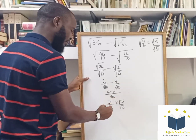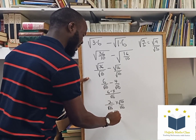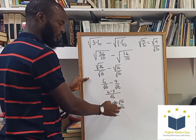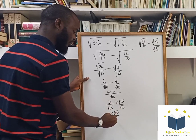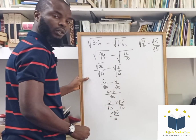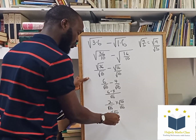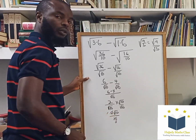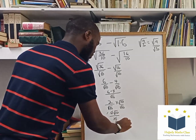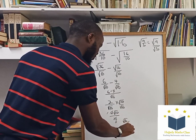2 multiplied by root 10 gives 2 root 10. Dividing, 2 goes into 2 once and 2 goes into 10 five times. So finally, we have root 10 over 5.